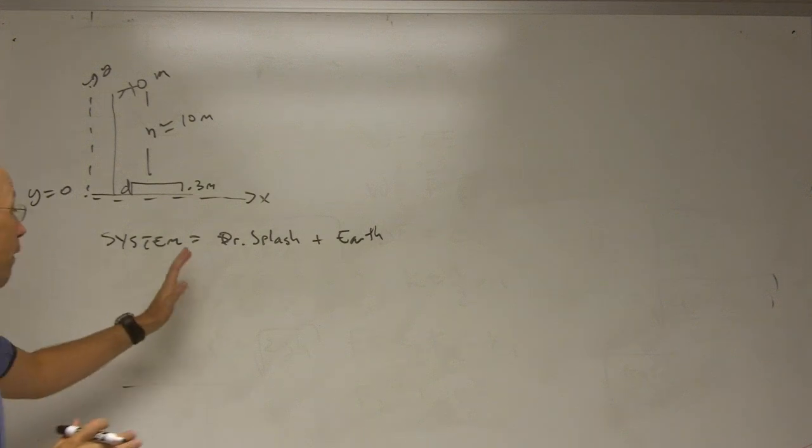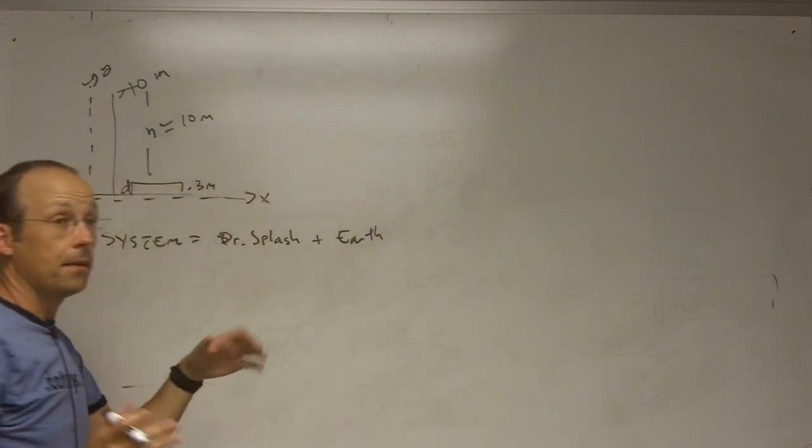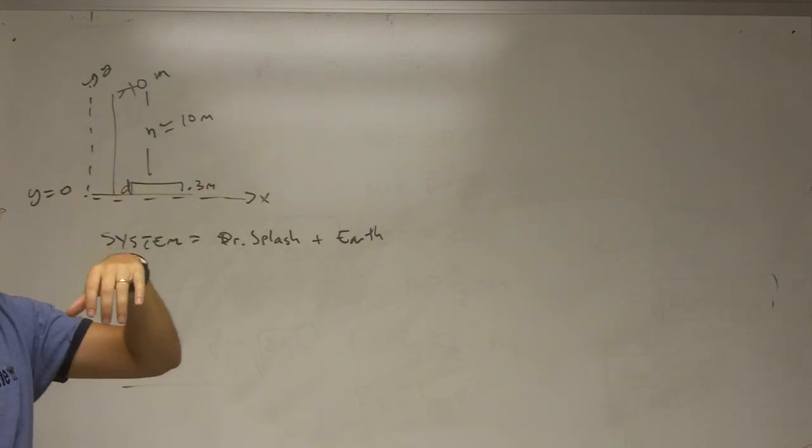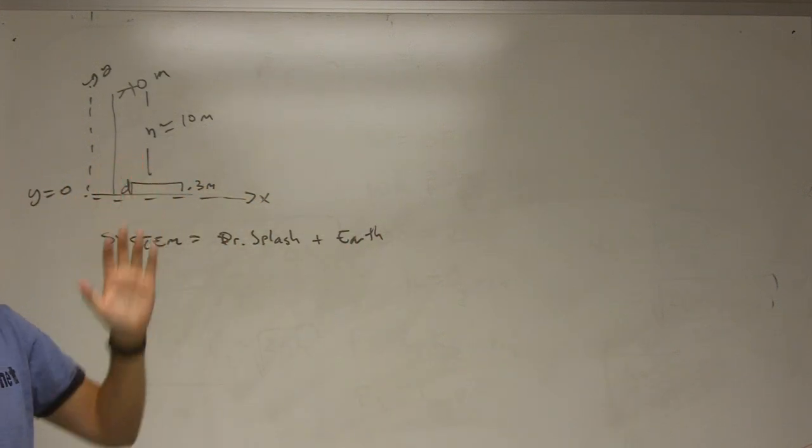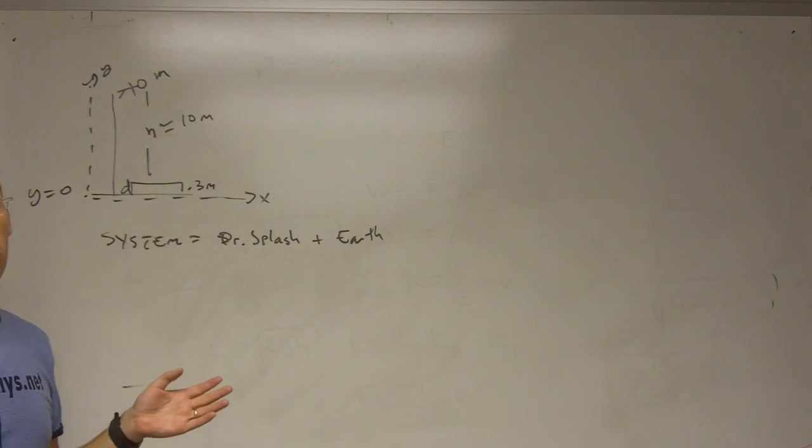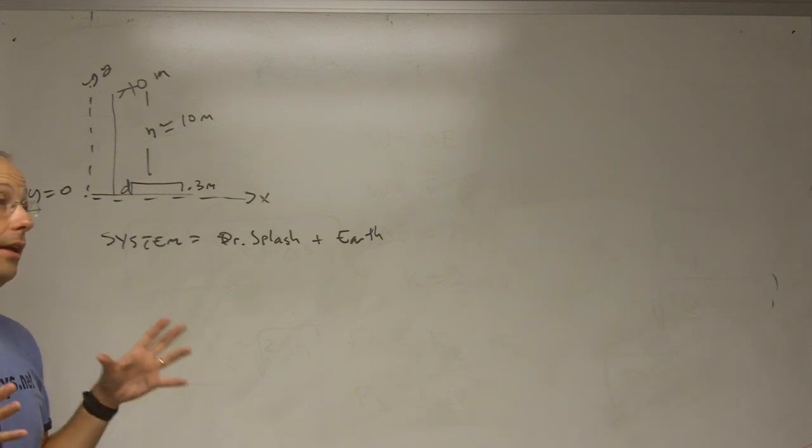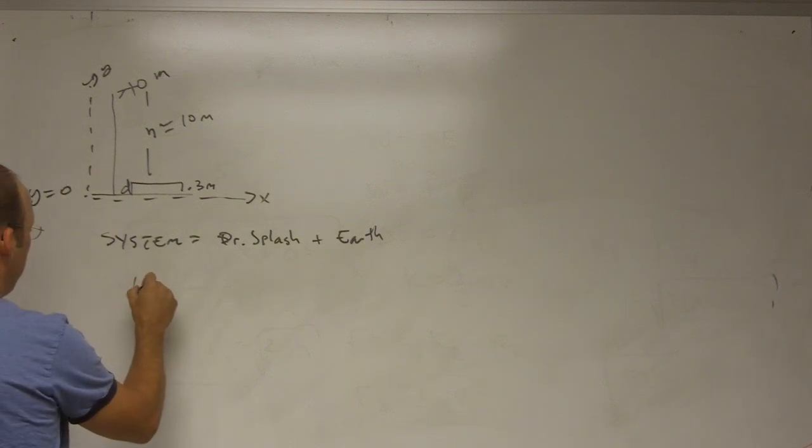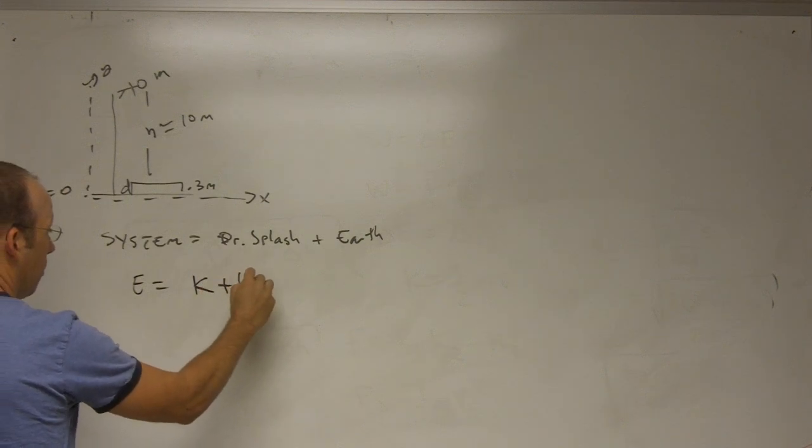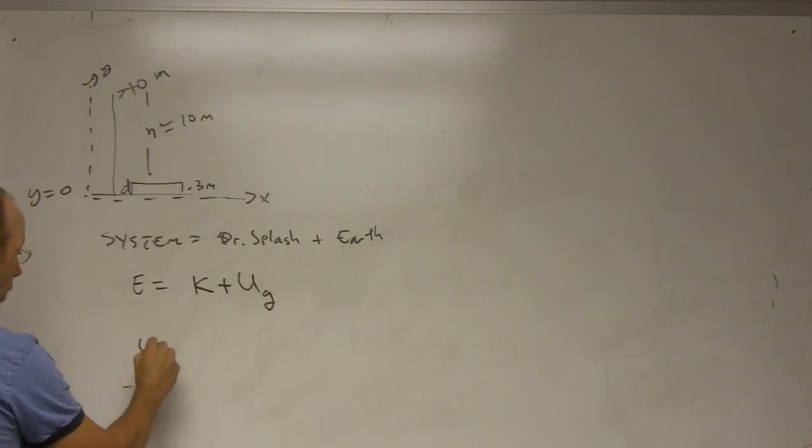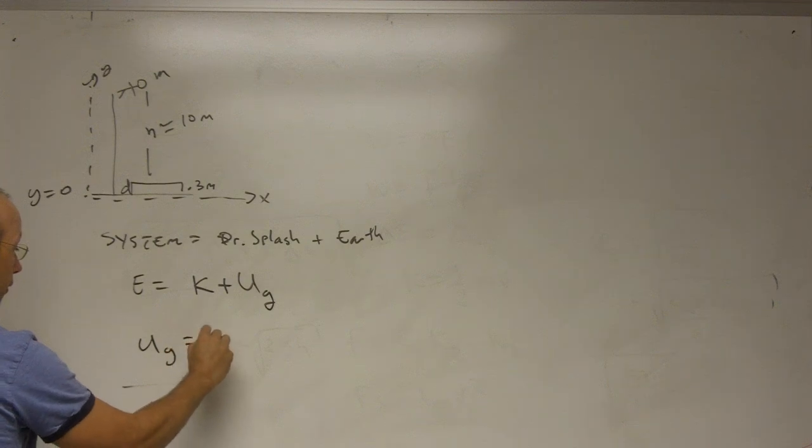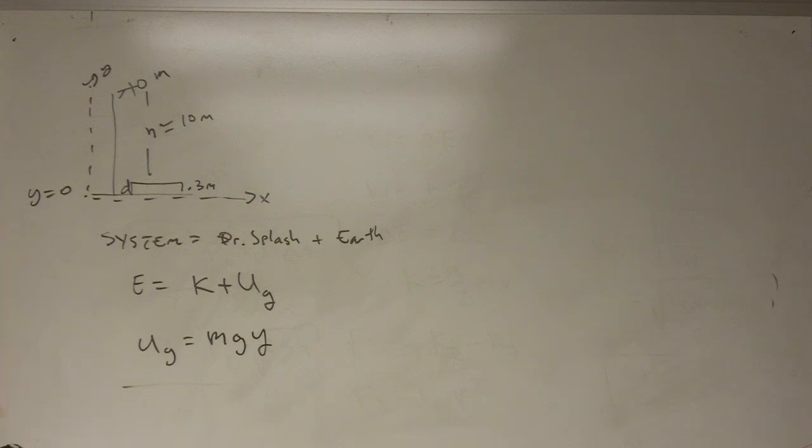Because if I have my system as both of these things then the gravitational force between those two objects, Professor Splash and the earth, wouldn't be in the work term. But we have to take into account that somehow. If we have a system like that then we can have two things. Our energy at any given time would be the kinetic energy plus gravitational potential energy. Where close to the surface of the earth this is going to be MgY. And I derived that in the book so you can check that out.